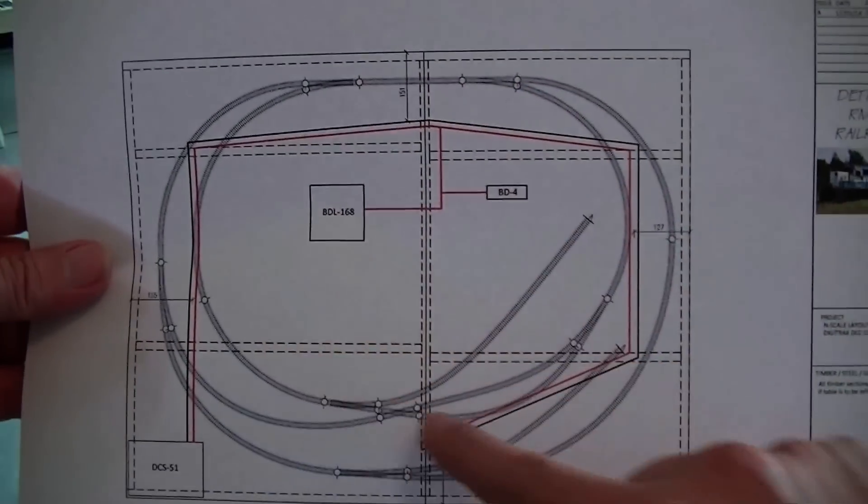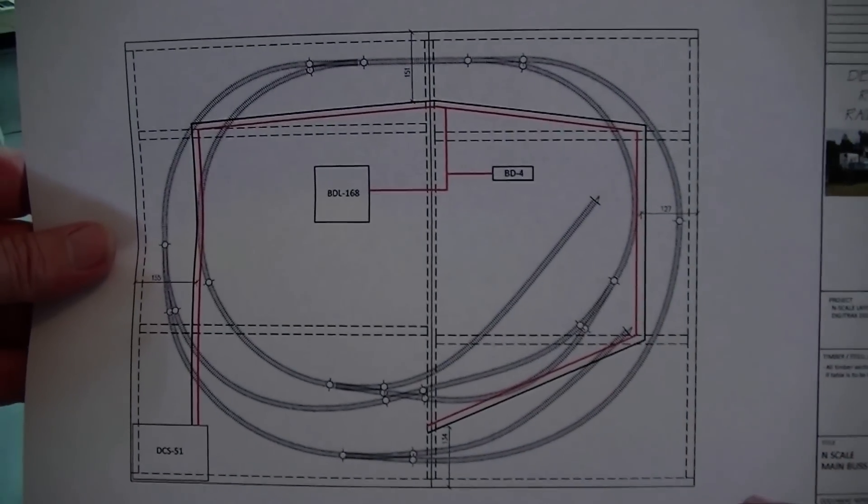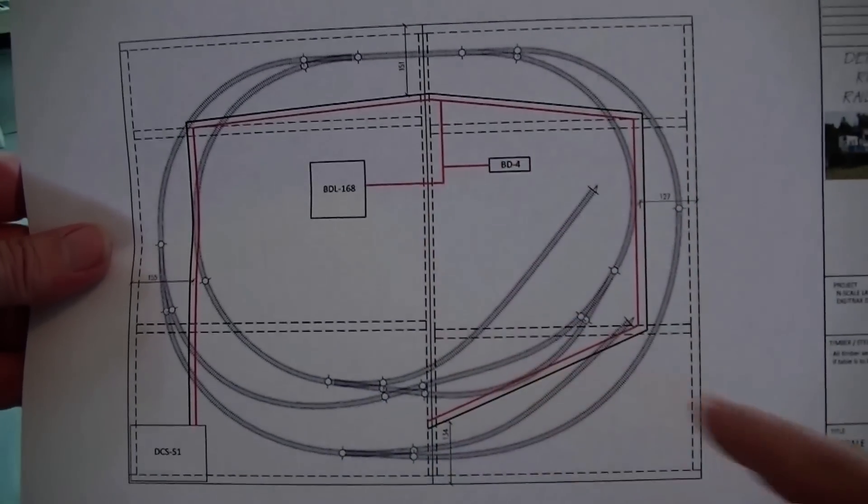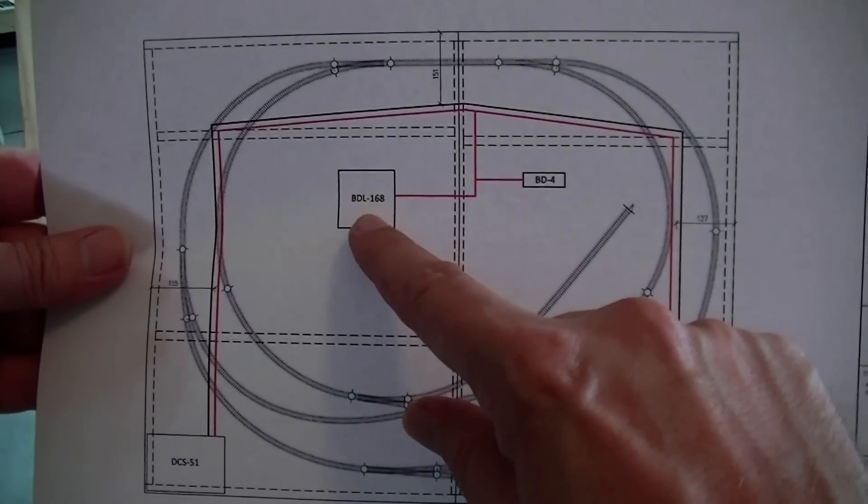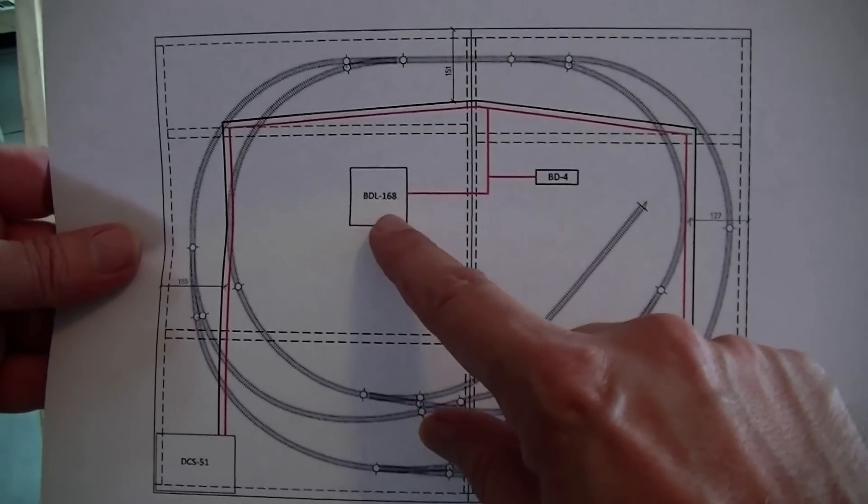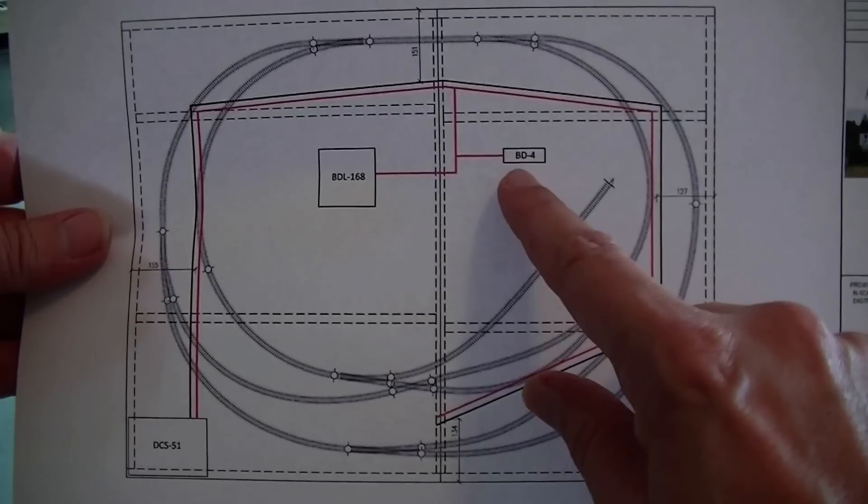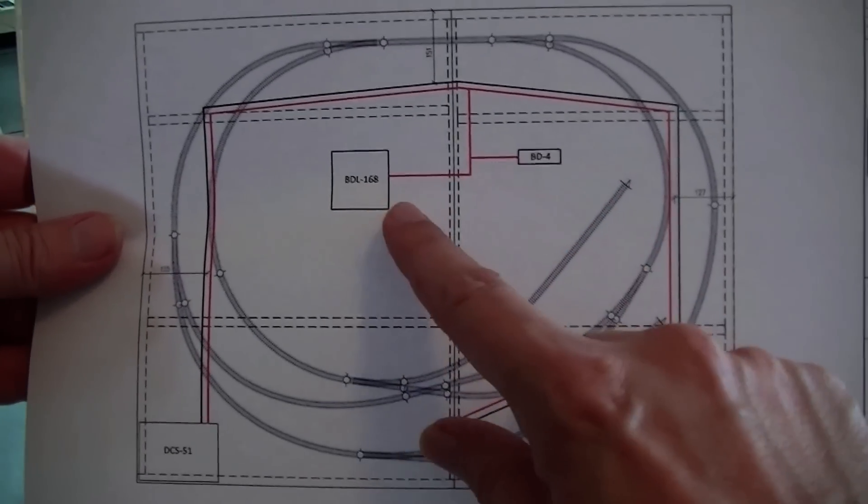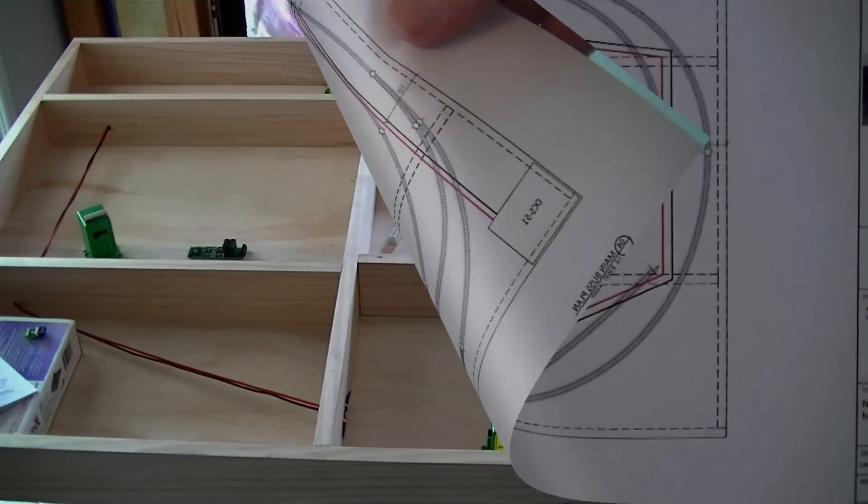On this particular layout there's going to be a total of 19 blocks, so 19 detection sections on this small layout. The BDL168 can only handle 16, and then the BD4 can do 4, so that worked out quite nicely.